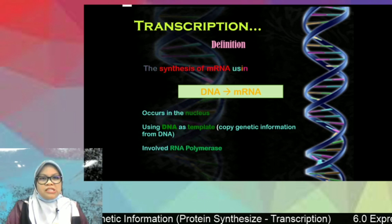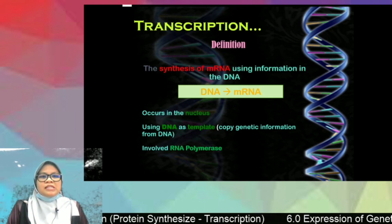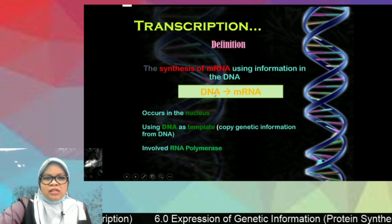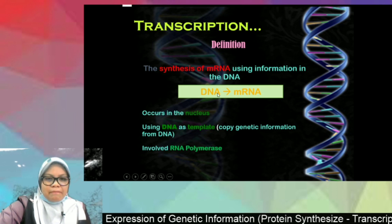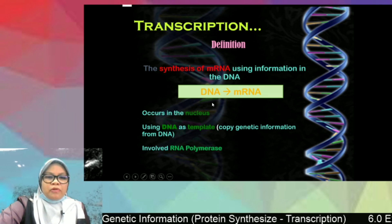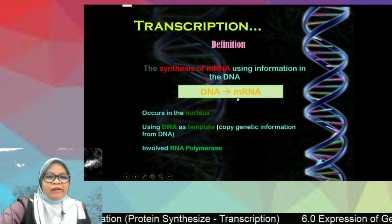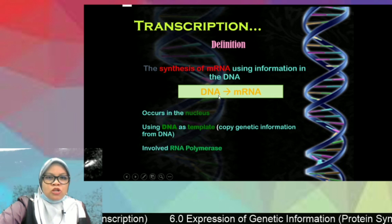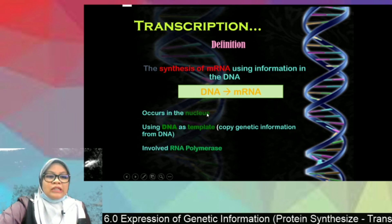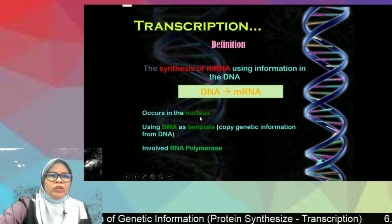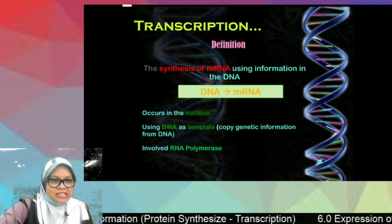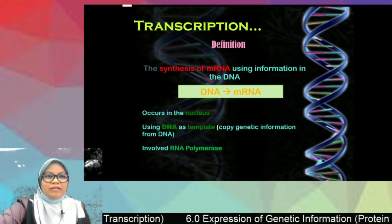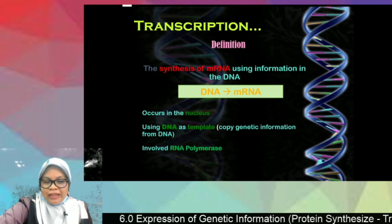The basic definition of transcription is: DNA to mRNA. You can say it is a process using DNA as a template to produce mRNA, or a process producing mRNA from DNA. Since DNA is present in the nucleus, transcription takes place in the nucleus. Compared to DNA replication which involves eight enzymes, transcription requires only one enzyme: RNA polymerase.